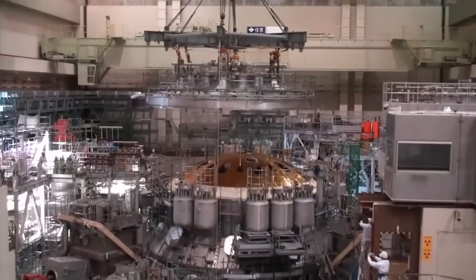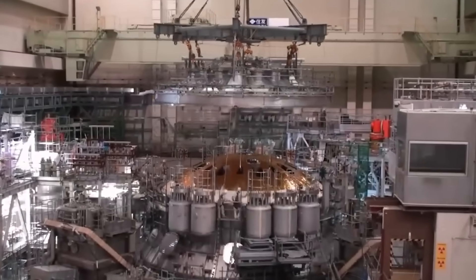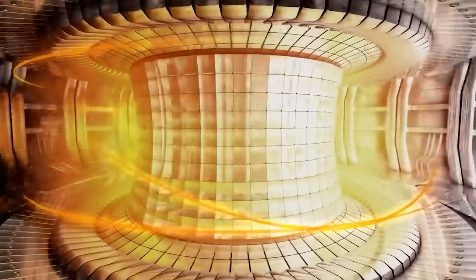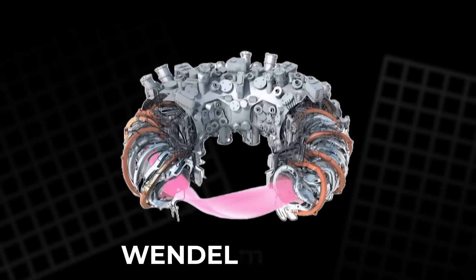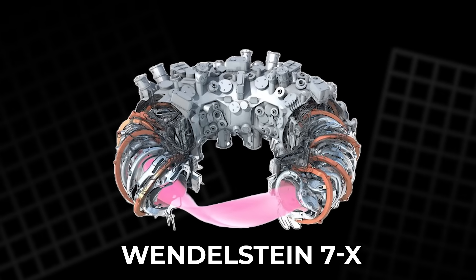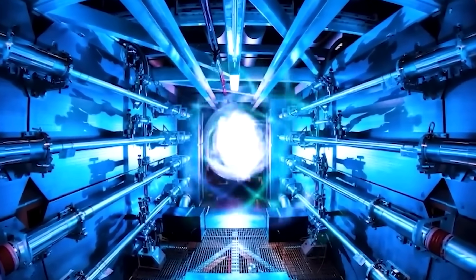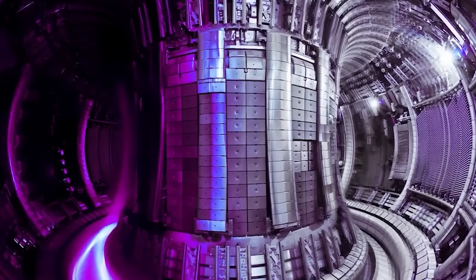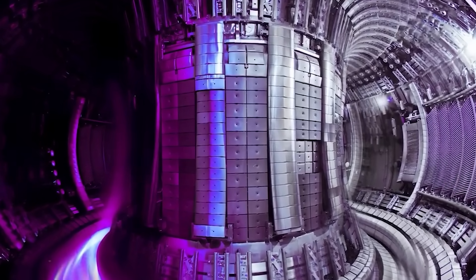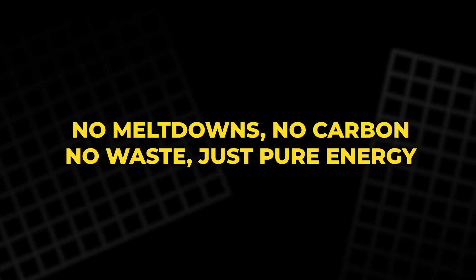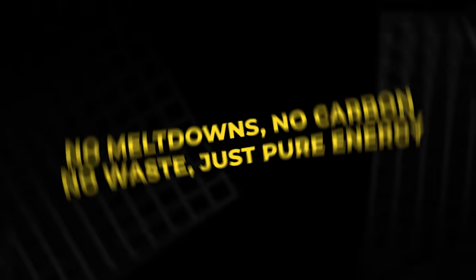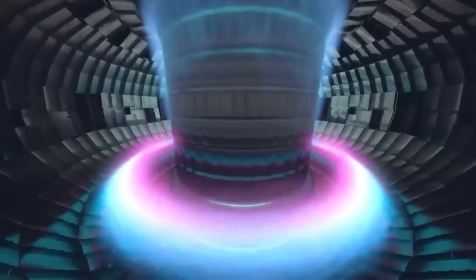While the world watched France's massive ITER project rise from the ground, Germany was racing ahead with something stranger, smaller and far more ambitious. A machine called the Wendelstein 7X. It looks bizarre, like a metallic pretzel from another world, but this isn't art. It's one of the most complex scientific instruments ever built, and it could bring us clean, limitless power. No meltdowns. No carbon. No waste. Just pure energy, born from the same process that powers the sun.